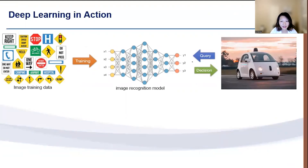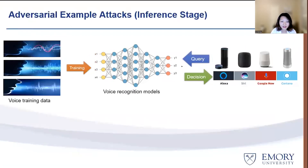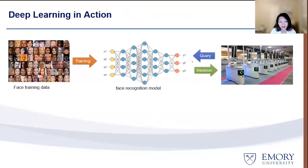Here's an application example where an image recognition model is trained on image signs with their associated labels, then used by self-driving cars to automatically recognize road signs. Here's another example where a voice recognition system is trained on speech data and then used by voice assistants to recognize commands. One more example: a face recognition model trained on face data, then used at airport security control for face recognition.